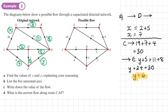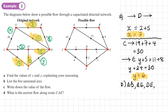Now for part B: list all of the saturated arcs — those where the flow equals the capacity. Checking each arc: CD has X equals 7, so it's not saturated. The arcs that are saturated are AB, AE, DE, DF, and CF. Arc FE has Y equals 6, so it is not saturated.